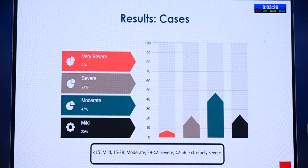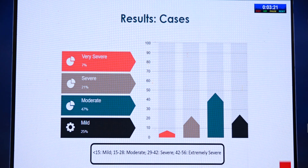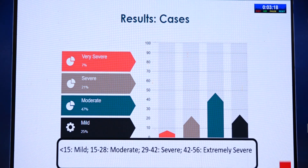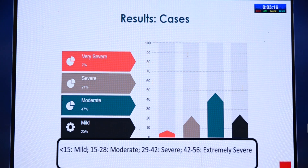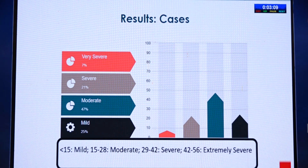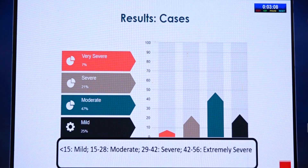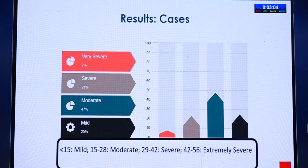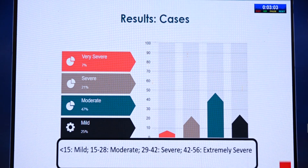The Hamilton Anxiety Rating Scale contains 14 symptoms and is divided into four categories: mild, moderate, severe, and extremely severe. In our study, around 25% of patients came under the mild category, and 47% came under the moderate category.